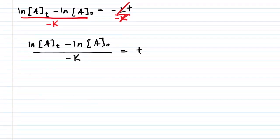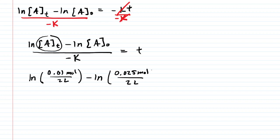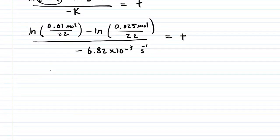So we have time isolated. We can begin to plug in. Now, what we're doing is we're given the final number of moles in part B, but the equation has concentration. So we're going to have to take that final number of moles, which was 0.01, and then divide that by 2 liters, because that's going to give us a concentration in terms of molarity. And then we subtract the natural log. And then same thing here. The initial number of moles was 0.025, but we need concentration. So just make sure you divide that by 2 liters. And then you're going to divide that all by negative K, and K was given in the question.